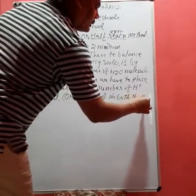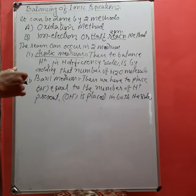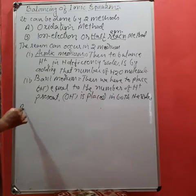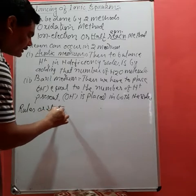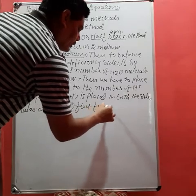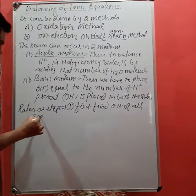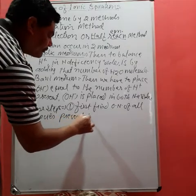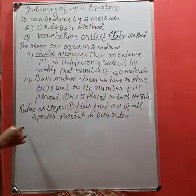This is the main concept when balancing equations in acidic or basic medium. Student, there are some rules or steps. Rule number one: first, find the oxidation number of all species present on both sides.